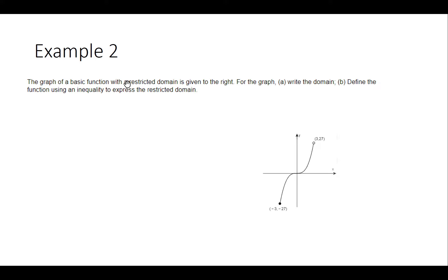Given a graph with a restricted domain, we need to write the domain — that is, find the x-values the graph spans. The graph starts at negative 3 (filled circle, included) and goes to positive 3 (open circle, not included). So the domain is from negative 3 to positive 3, including negative 3 but not including positive 3.